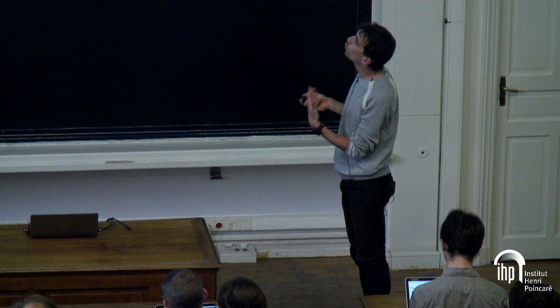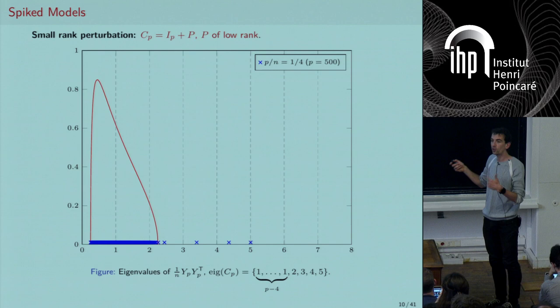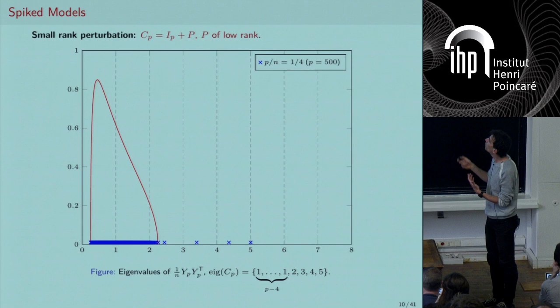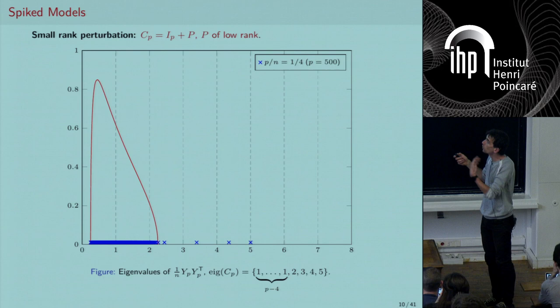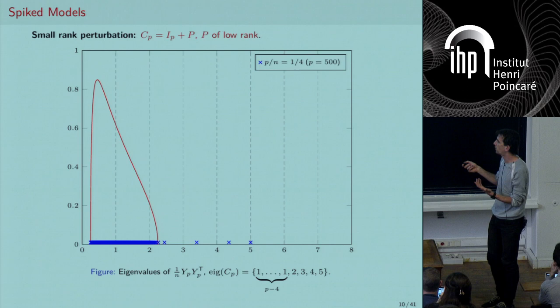Looking at the eigenvalues of this matrix: most concentrate in the bulk of the Marchenko-Pastur distribution, but because of the perturbation P, you may or may not have a few eigenvalues appearing outside the main support. When P has eigenvalues that are sufficiently large, a few eigenvalues of Ĉ_p will be seen away from the noise bulk.